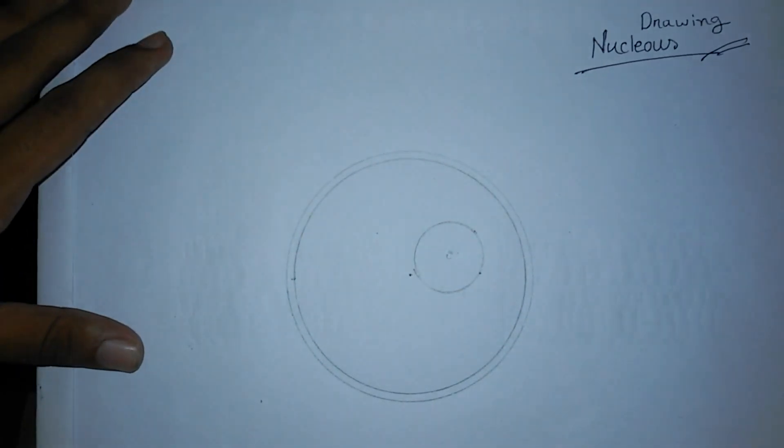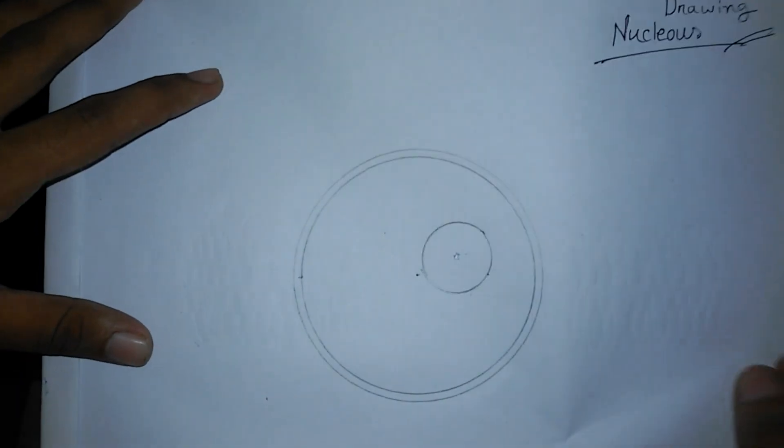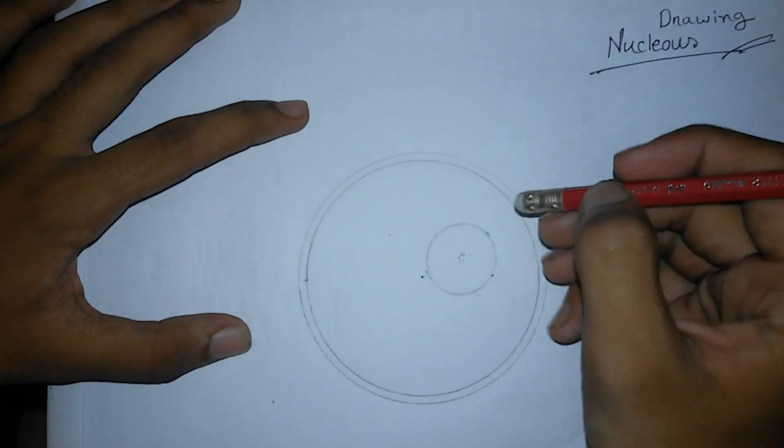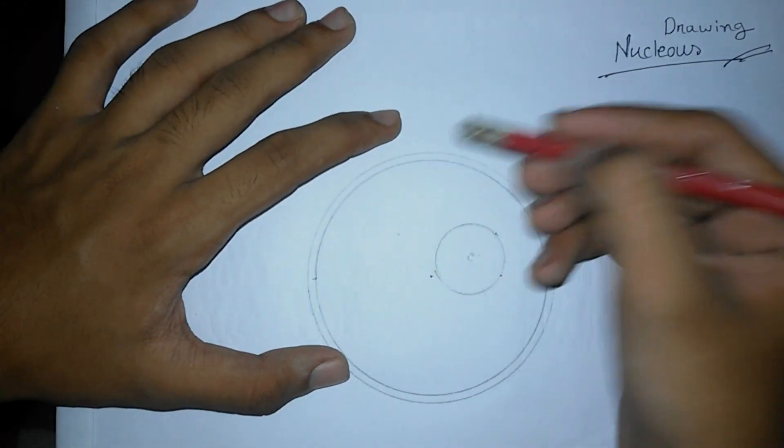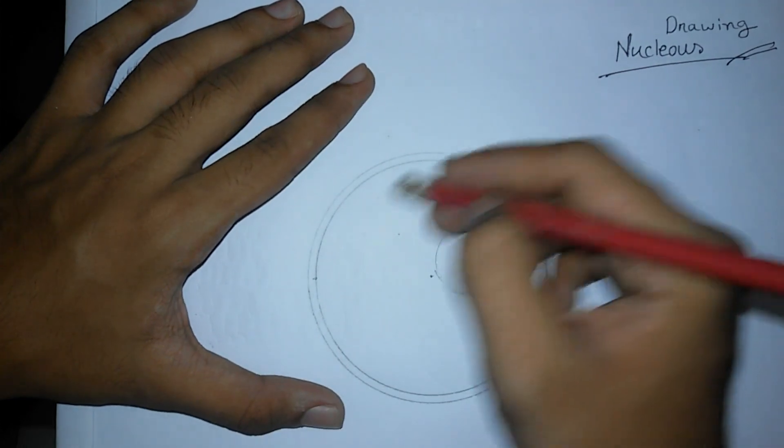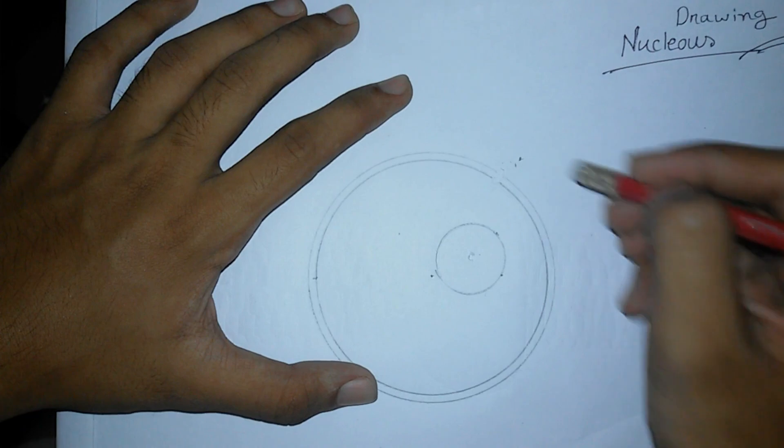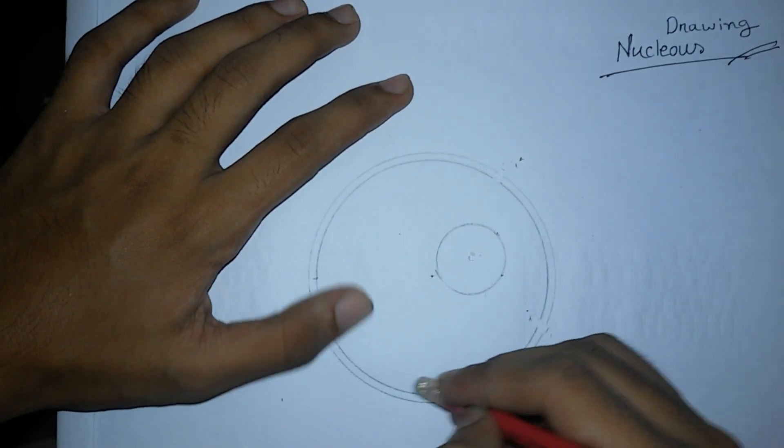Then I have to move to the next task. I need to erase some parts of this circle, like five parts—here, here, here, here, and here.